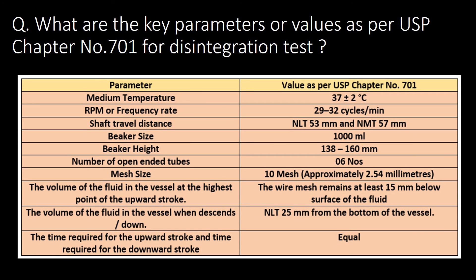What are the key parameters or values as per USP chapter number 701 for the disintegration test? Here is the list of parameters against values as per USP chapter number 701.